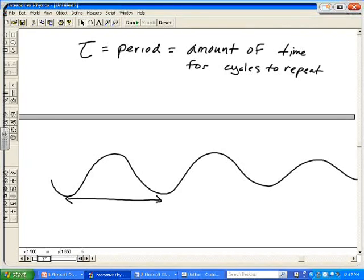Now, the inverse of period would be frequency, or how often a cycle repeats. So if you have the period, you can get the frequency by taking the reciprocal of it. And conversely, if you had the frequency, you can get the period by taking the reciprocal.